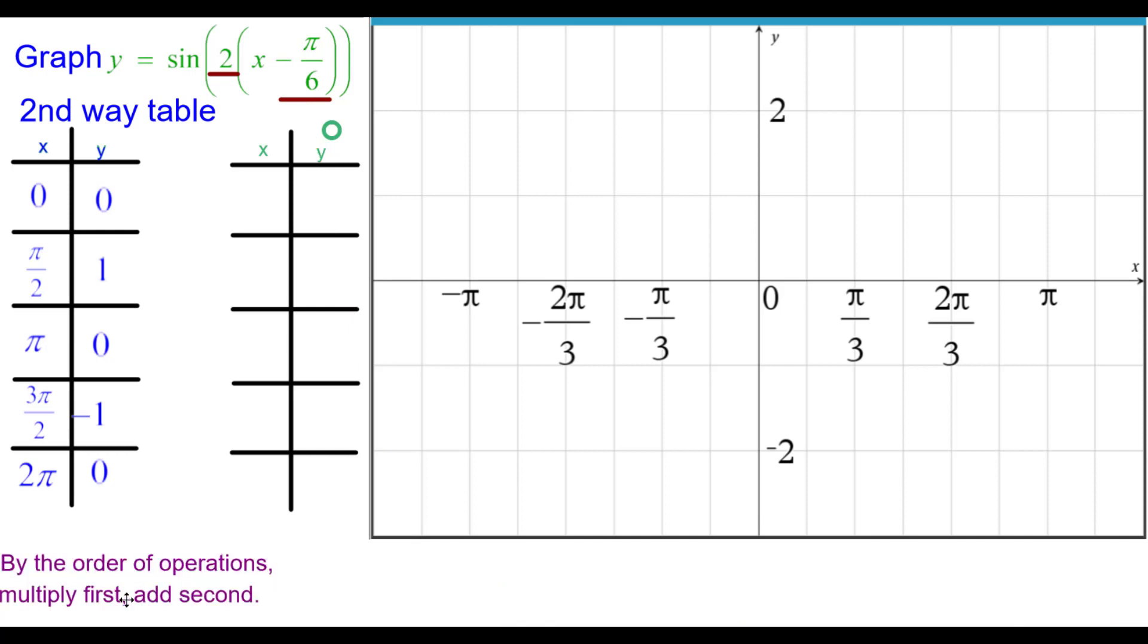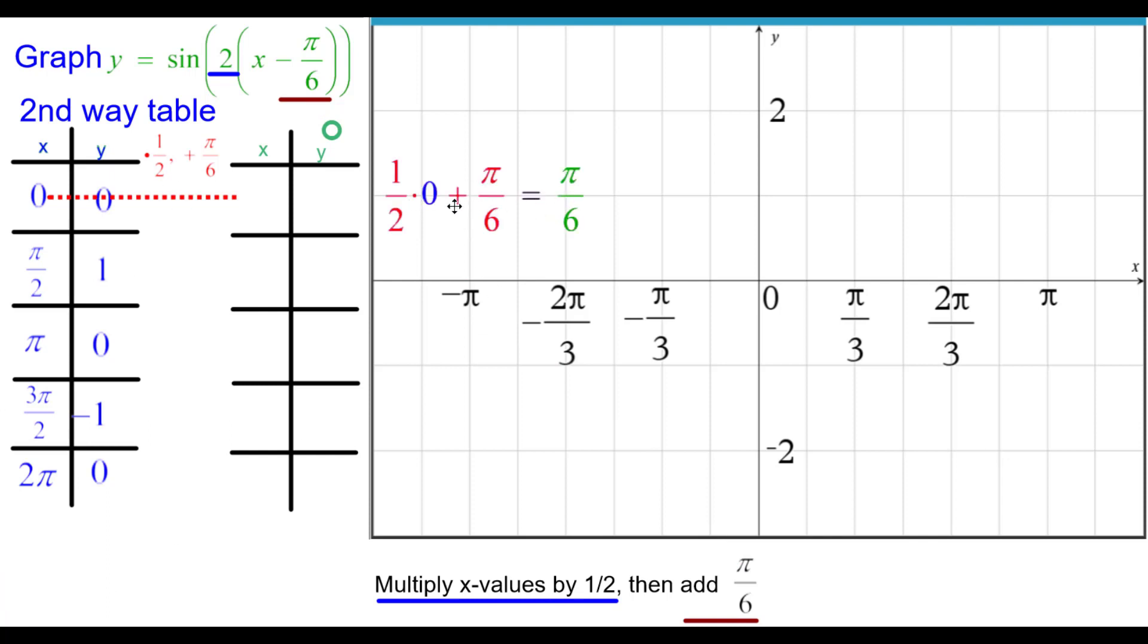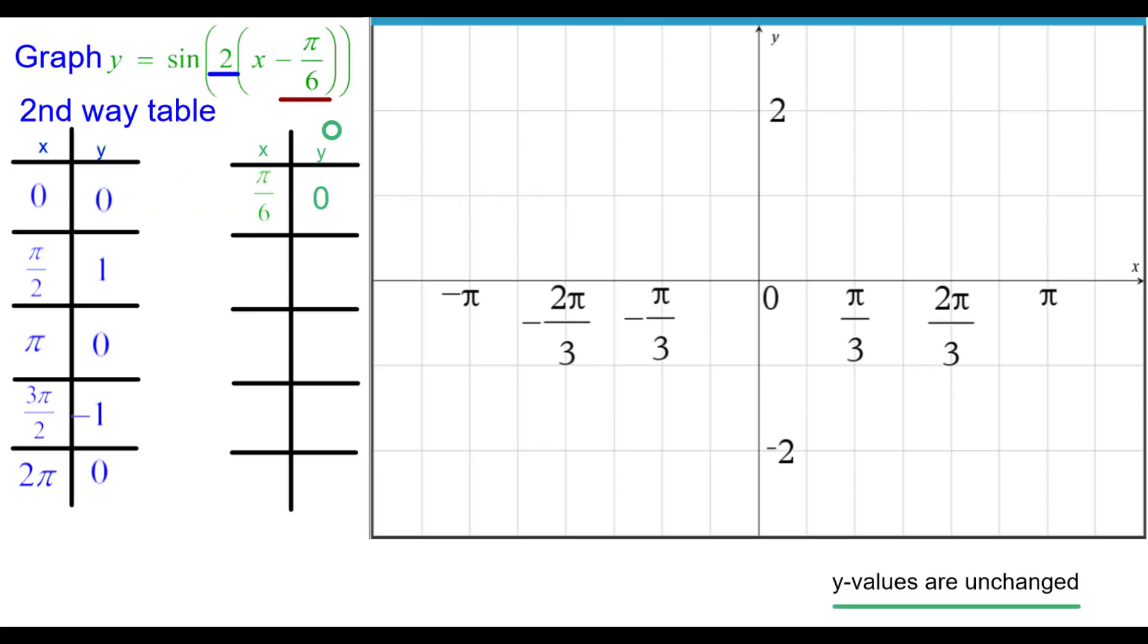Now by the order of operations, we need to do the multiplication first. And then we do the addition second. So we're going to multiply x values by 1 half. Then add pi over 6. So starting with 0 times 1 half plus pi over 6. We're going to show the calculations over here. If you need to pause to see the arithmetic, do so. So x is pi over 6. And y values are unchanged. So it's at 0. So this is the initial point of our first period.